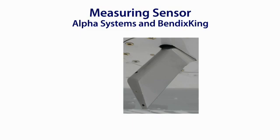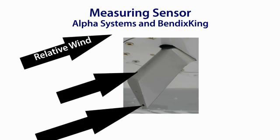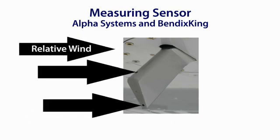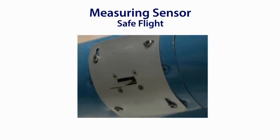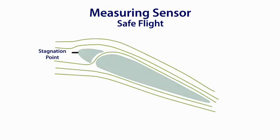The probe used in the Alpha Systems and Bendix King devices has two ports, each intaking ram air and sending it to the processing unit. The processor then calculates the difference in ram air pressure between the two ports to determine the direction of the relative wind. The Safe Flight device has a tab on the leading edge of the wing that is moved by the relative wind to sense the stagnation point, then sends this information to the device in the cockpit. While simple in theory, the precision of the device and its calibration is what allows it to measure the direction of the relative wind.